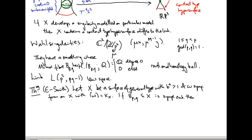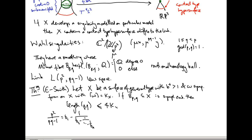Then if there is a symplectic embedding of B(p,q) in X, we can put a bound on p just in terms of the Chern numbers of X. Specifically, the length of the continued fraction expansion of p²/(pq−1) — written with negative signs — is bounded above by 4K_X² + 7. That gives you a bound on the kinds of rational homology balls you can embed, and hence on the kinds of Wahl singularities X can develop.